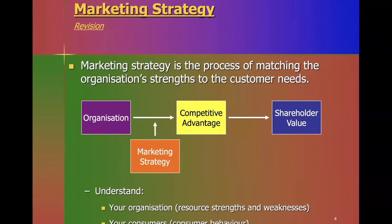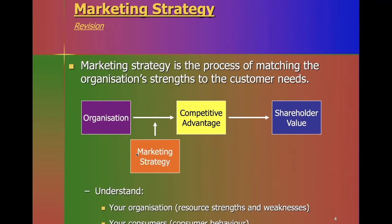At its very essence, marketing strategy is a process of matching what the company does well — its strengths — with understanding the customer's needs. Marketing strategy becomes a moderating influence that takes what the organization has in terms of its resources and capabilities and turns those into a competitive advantage. This moderating process means that even though the organization has certain resources, depending on how it organizes those and applies strategy, it is able to achieve a competitive advantage or not. We cannot gain a competitive advantage without understanding customers' needs.